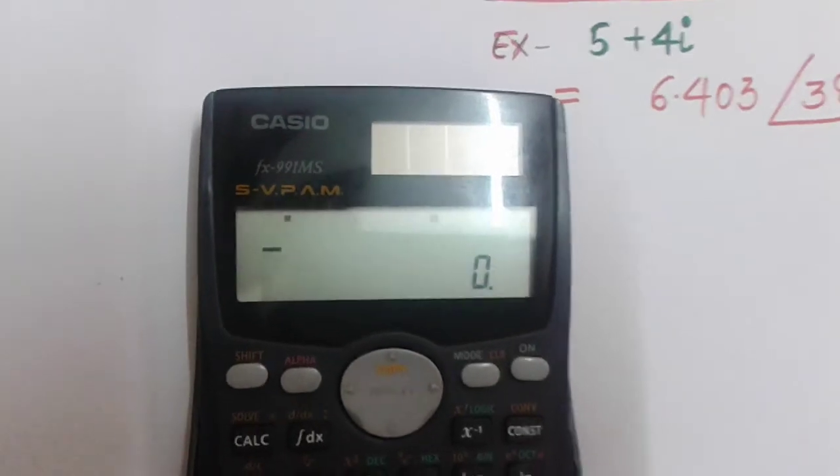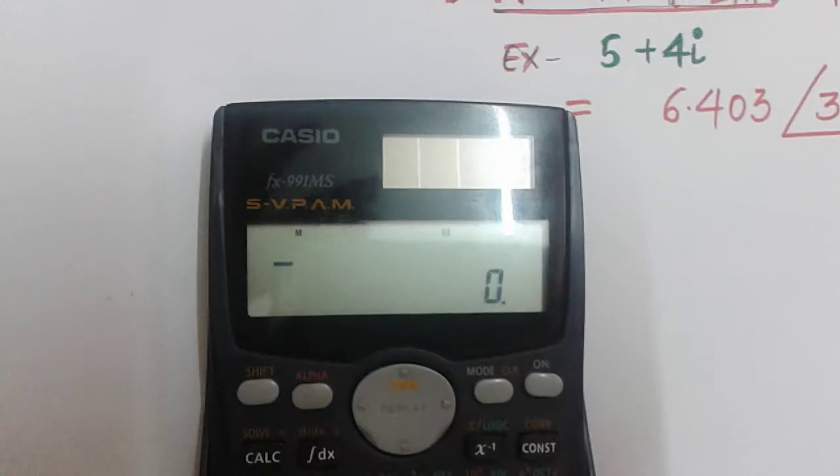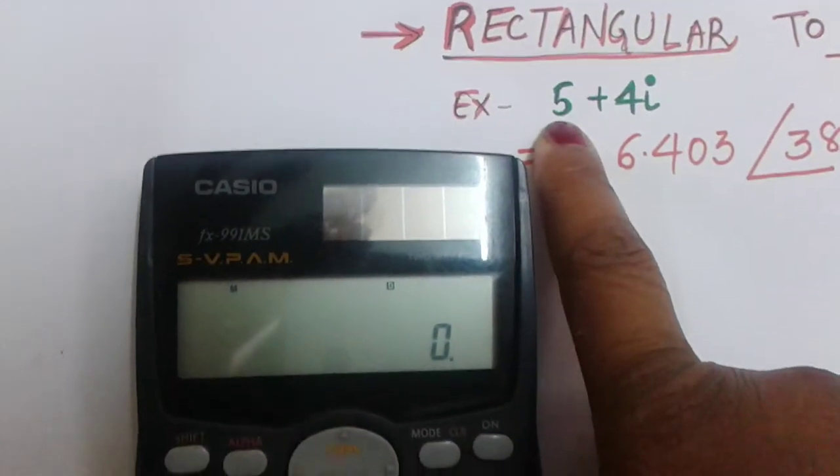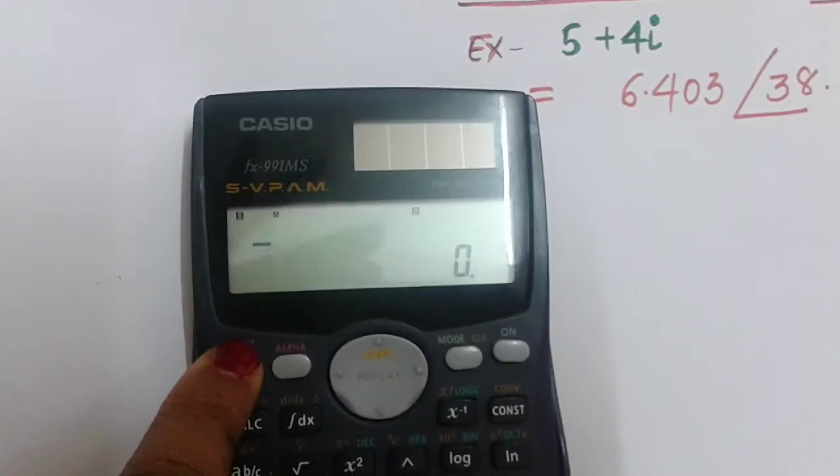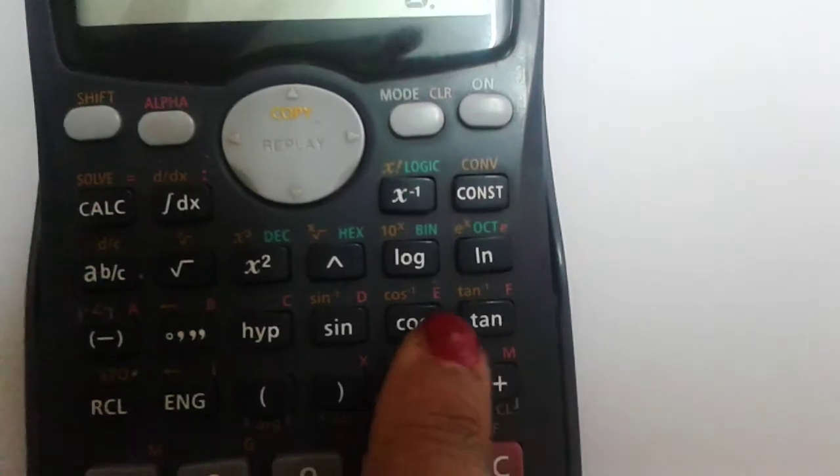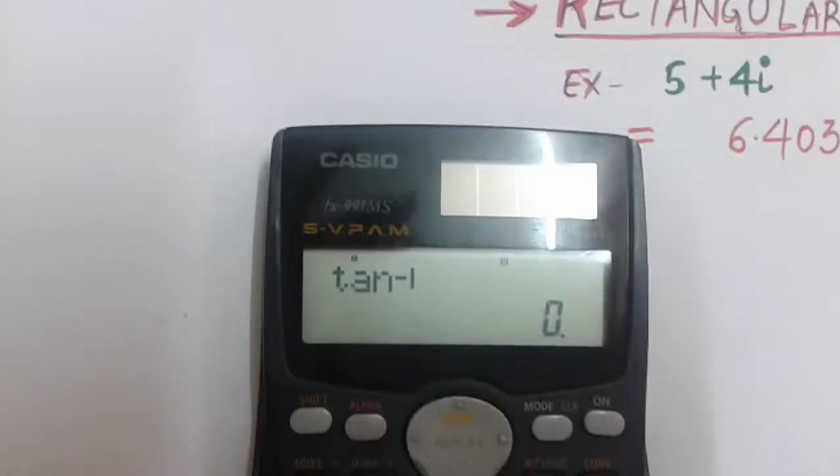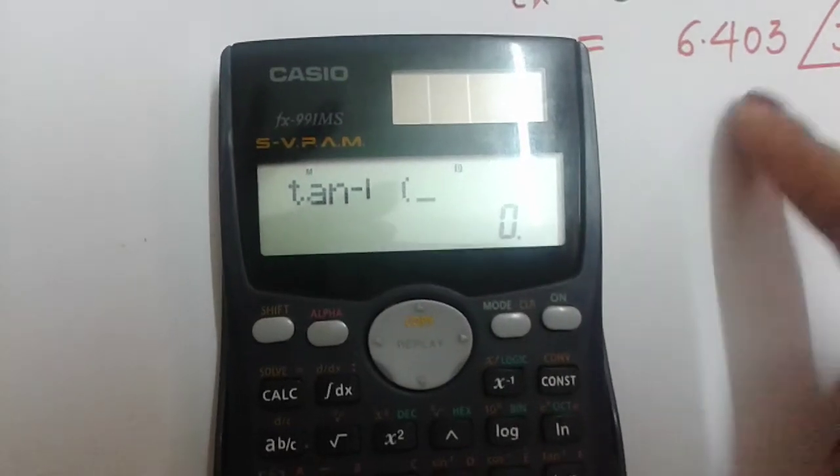My imaginary part is 4 and real part is 5. For calculating the angle, I will take SHIFT, tan inverse is there, you can see here. After that, put bracket. First you take your imaginary part, that is 4, divided by 5, bracket close, and equals.